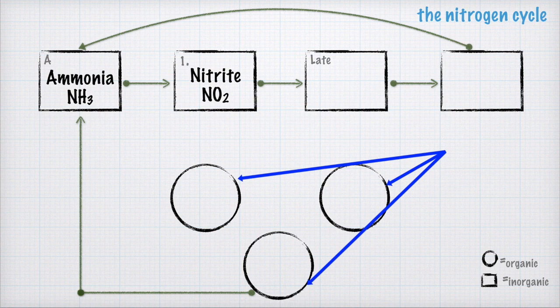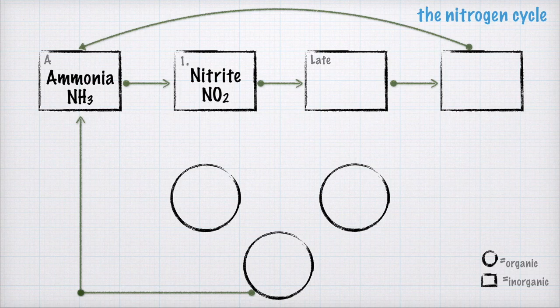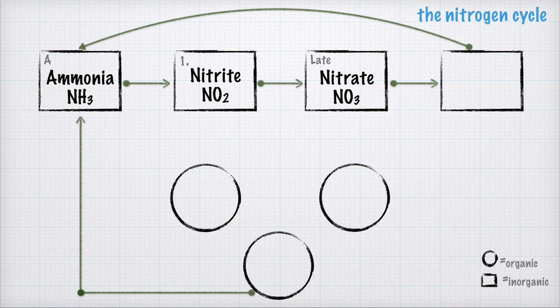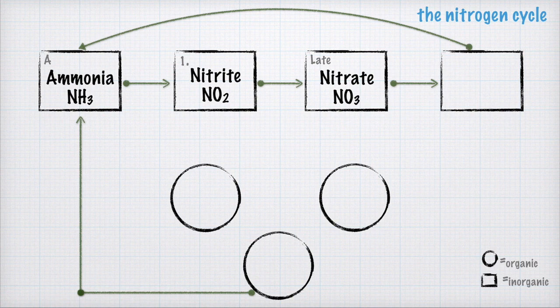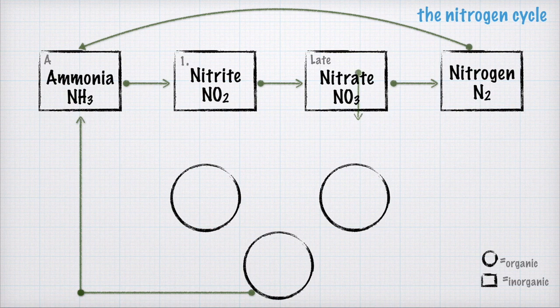The second inorganic compound is nitrite — that's why there's a 1, reminding you of the letter I. Nitrite is NO2. Then we get to the third slot: nitrate, NO3. There's a process that allows ammonia to go to nitrite, and then from nitrite to nitrate, each controlled by a specific bacteria. When the O3 comes off, we get to nitrogen N2. Seventy-eight percent of our atmosphere is made up of nitrogen gas.